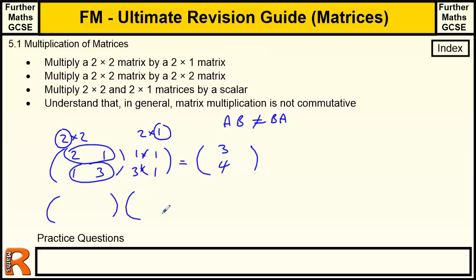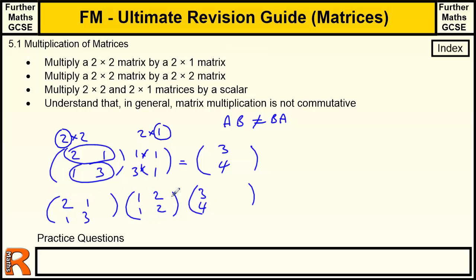If you were doing a 2 by 2 times a 2 by 2, you would have the same first two elements — the 2 and 1 giving 3, and the 1 and 3 giving 4. Then you would do the next column: 2, 1 onto the 2 and 2. So 2 times 2 and 1 times 2 gives you 6. And 1 times 2 and 3 times 2 gives you 2 plus 6, which is 8. A bit of practice and this becomes fairly routine.